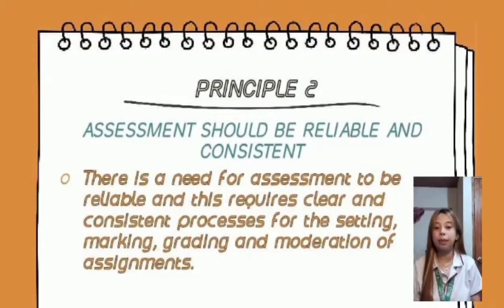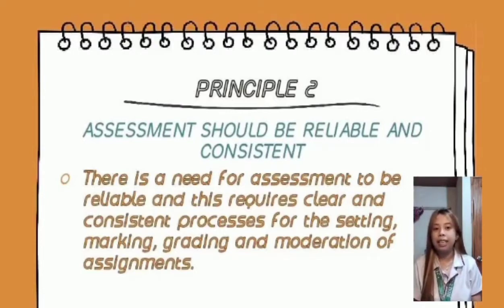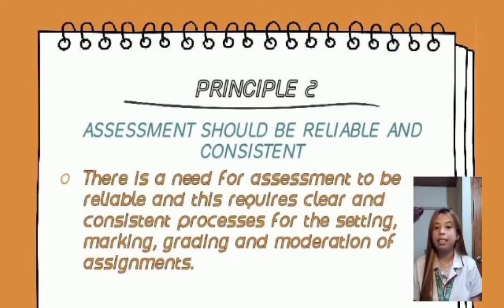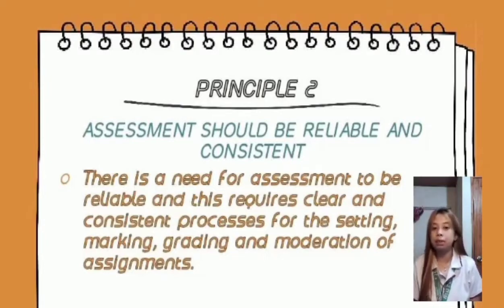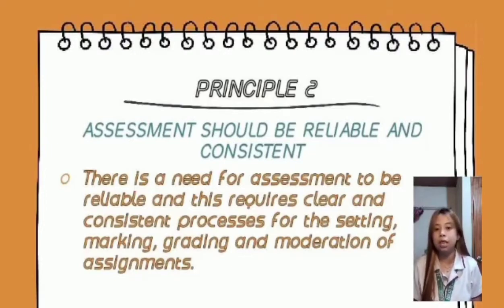Principle 2 states that assessment should be reliable and consistent. There is a need for assessment to be reliable, requiring clear and consistent processes for the setting, marking, grading, and moderation of assignments. Reliability refers to the extent to which an assessment consistently and accurately measures learning. When an assessment is reliable and consistent, you can be confident that repeated or similar tests will produce consistent results, allowing more generalized claims about students' level of achievement — particularly useful for informing teaching and learning decisions.